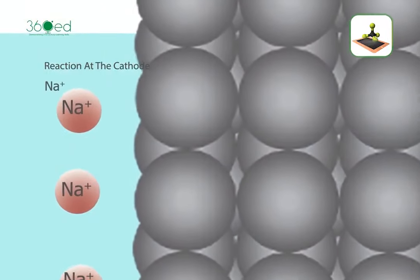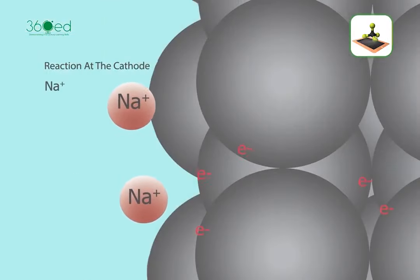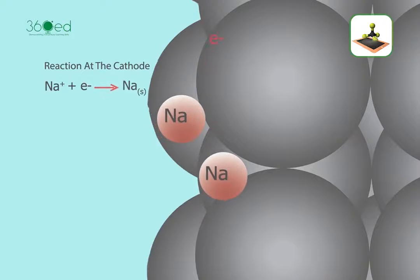At the cathode, sodium ions receive electrons from the cathode and discharge into sodium atoms, and then sodium atoms deposit at the cathode.